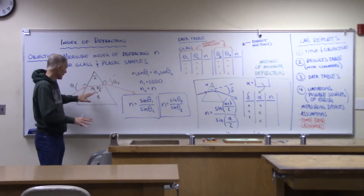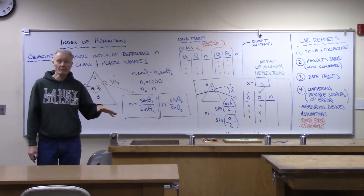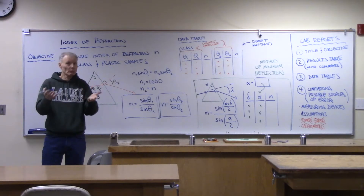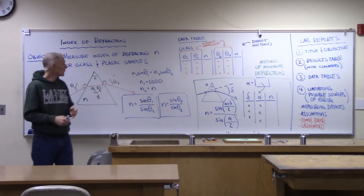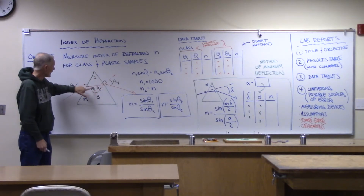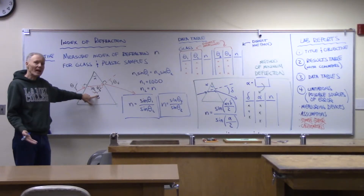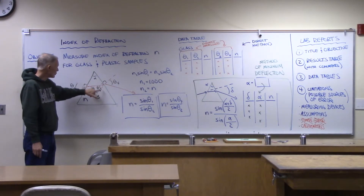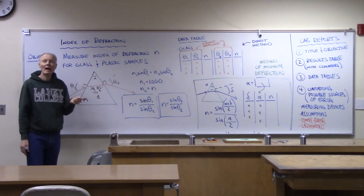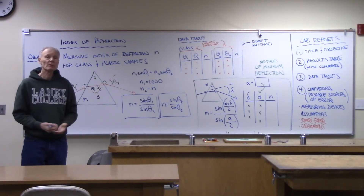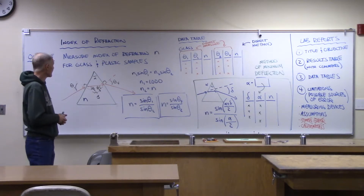Theta two and theta three are related based on the geometry of our prism. The samples we're using today have an apex angle of 60 degrees, and we'll verify that with our protractors. Since they're at 60 degrees, I can work around these triangles: if that's 60, then this angle down here is the supplementary angle — it's going to be 120. And theta two plus theta three combined have to equal alpha, so theta two and theta three are going to combine to be 60 degrees. Check the geometry out and make sure you understand how these diagrams work.